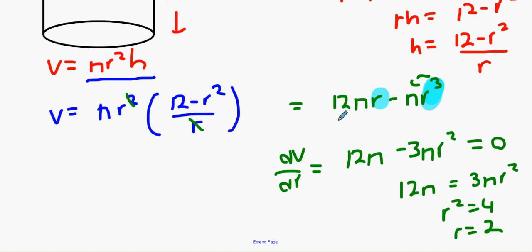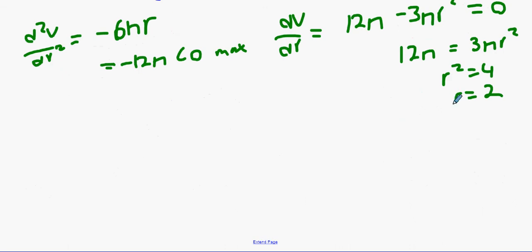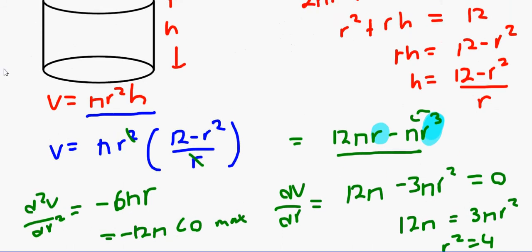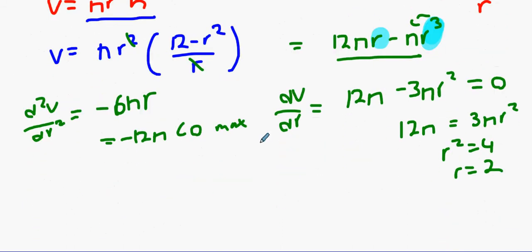Now second derivative test. If you're really feeling inclined, it's going to be derivative 12π. Bring the 2 in front, minus 6πr, and that's going to be negative because it's going to be minus 12π less than 0, which is a max. How do I find the volume? Put it back in. Just formula here isn't it? 12π times 2 minus π times 2 cubed. 24π minus 8π is 16π centimeters. Who got that one out? Alright good job.